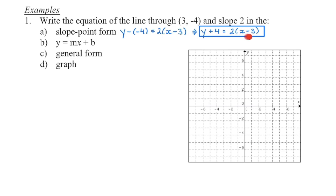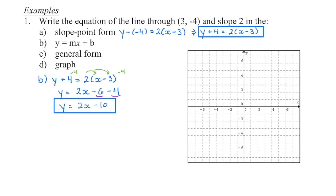Now we're going to rearrange into slope-intercept form. I need to isolate y by first distributing to get rid of the brackets, then moving the constant over. We distribute in the brackets and combine like terms to get slope-intercept form. My y-intercept is negative 10 and my slope is 2. Because all three equations represent the same line, the slope must match across all forms, which also matches the given information — lots of ways to check your work.